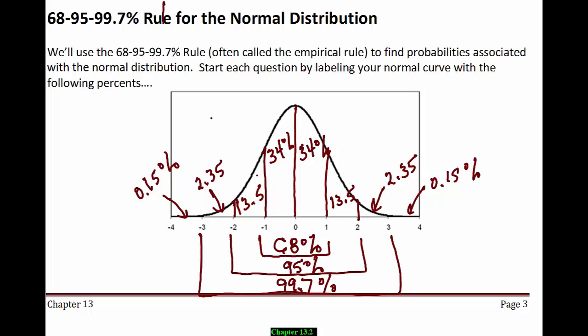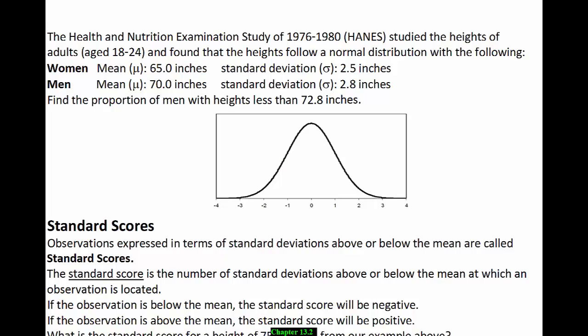The Haines study from 1976 to 1980 studied the heights of adults aged 18 to 24 and found that these heights follow a normal distribution. The women's distribution had a mean height of 65 inches and a standard deviation sigma of 2.5 inches. The men's height distribution had an average height of 70 inches and a standard deviation sigma of 2.8 inches. Find the proportion of men with heights less than 72.8 inches. Once we know the heights follow a normal distribution with the mean and standard deviation given, we can label our normal curve and get our answers.